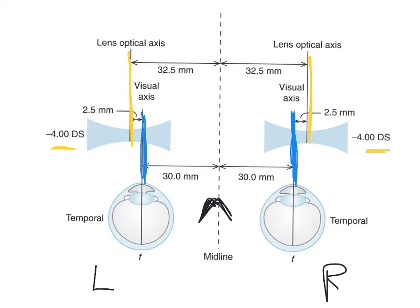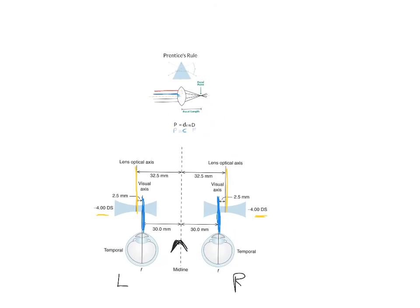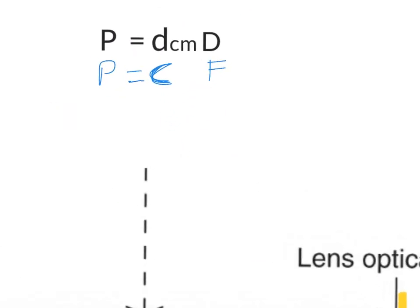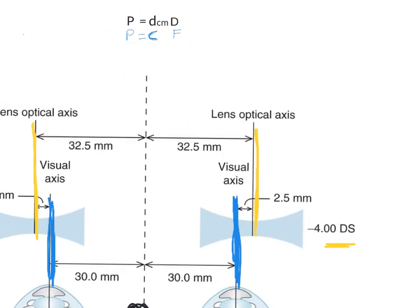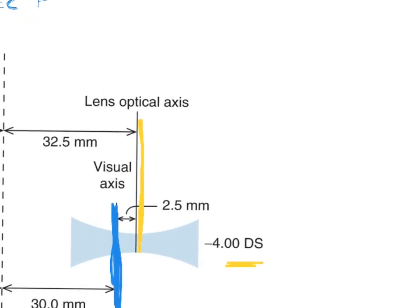So because of this, the lens acts like a prism. And you can calculate the amount by Prentice's Rule. So you go back to this equation, P equals d centimeters times D. So let's do that. Let's write that down.